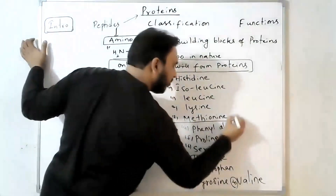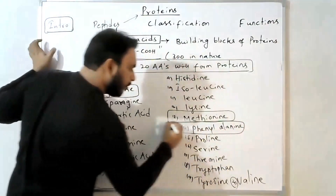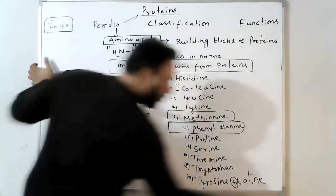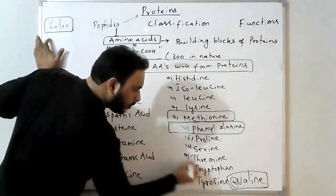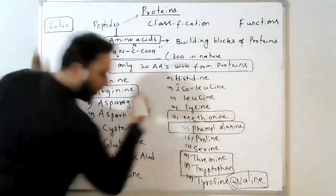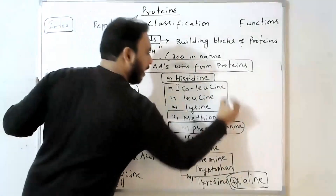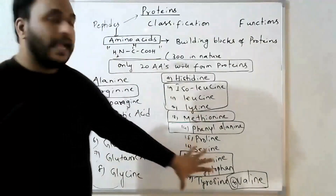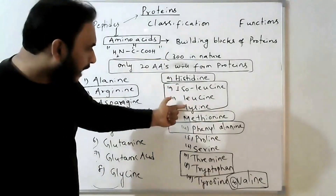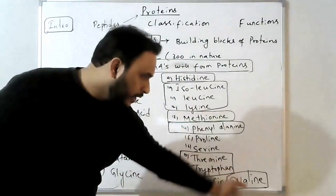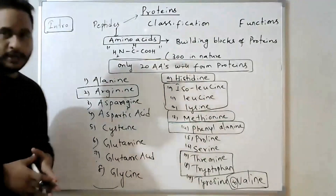The 10 essential amino acids are: methionine, phenylalanine, valine, threonine, tryptophan, histidine, isoleucine, and lysine — along with arginine and leucine. These are the essential amino acids which are boxed: arginine, histidine, isoleucine, lysine, methionine, phenylalanine, threonine, tryptophan, and valine.